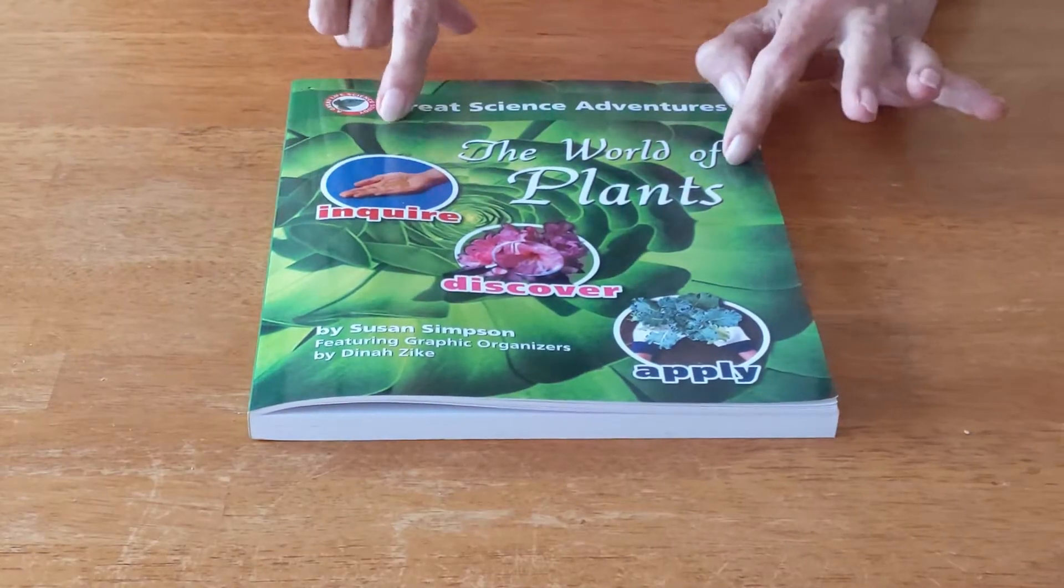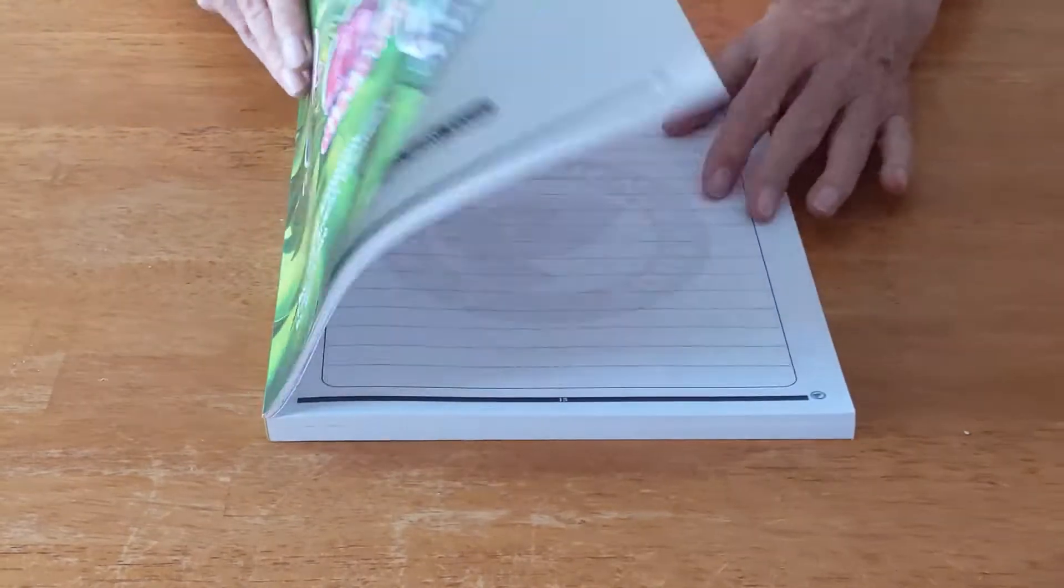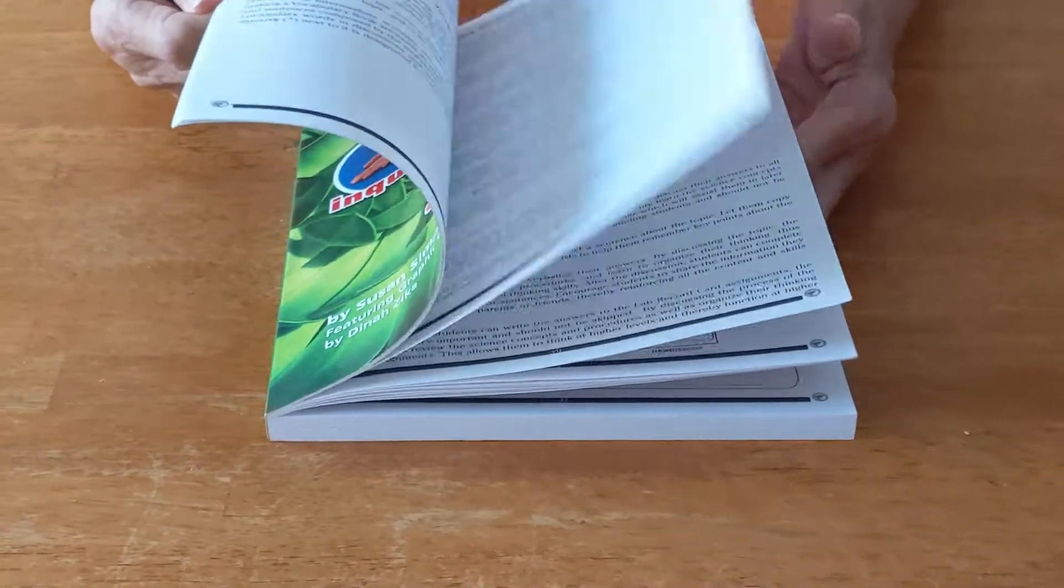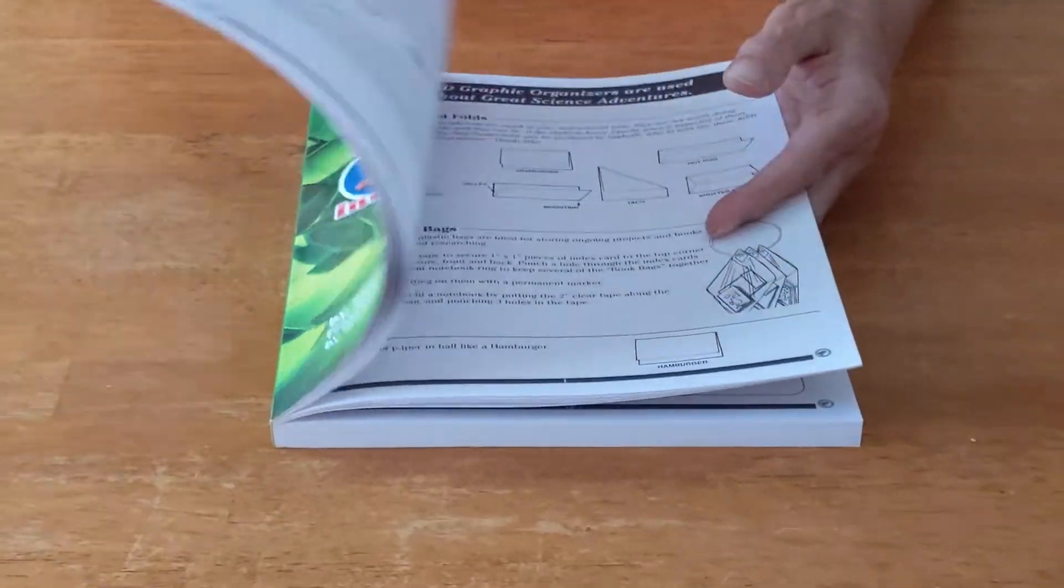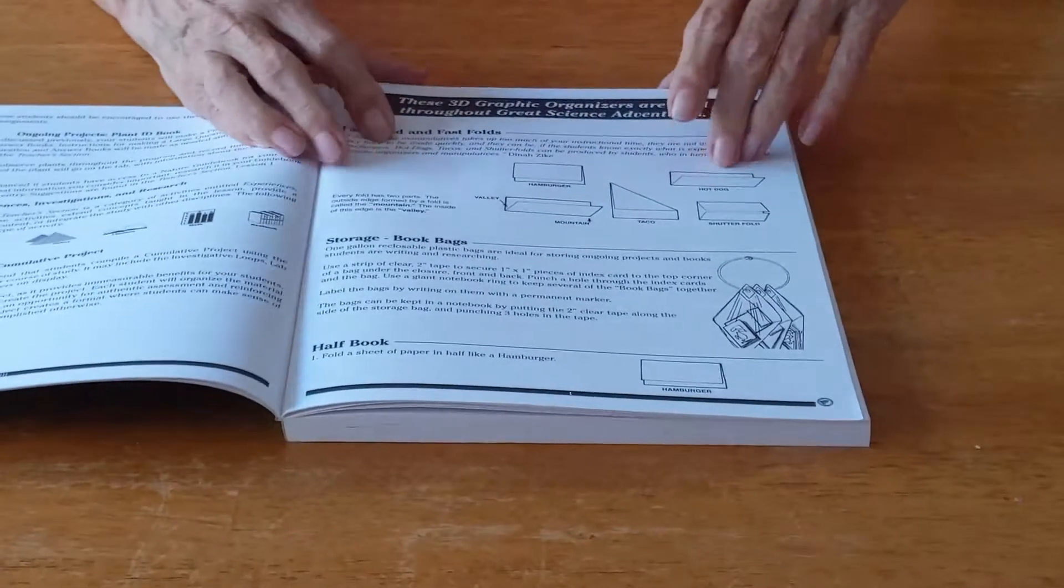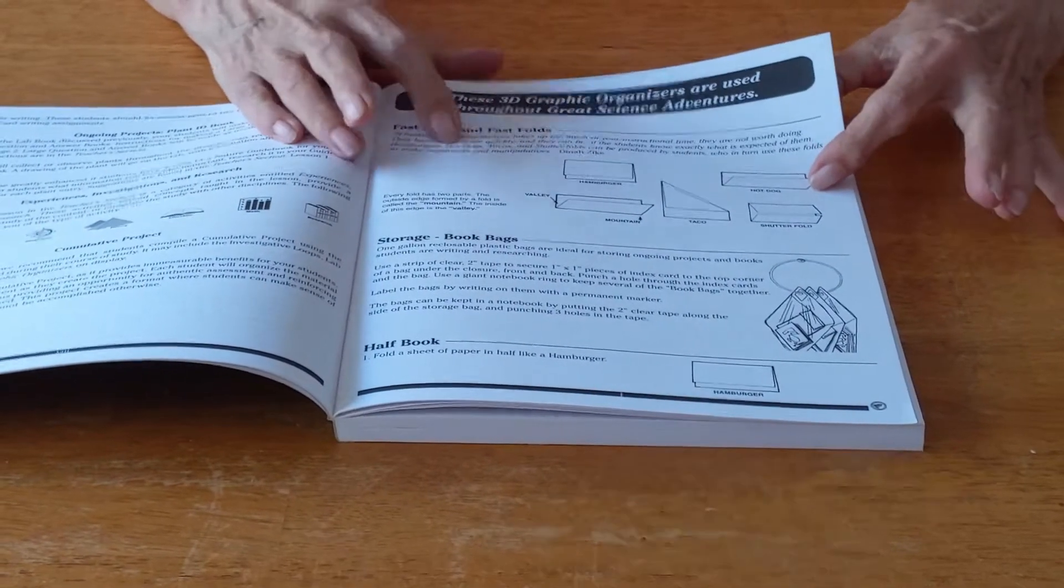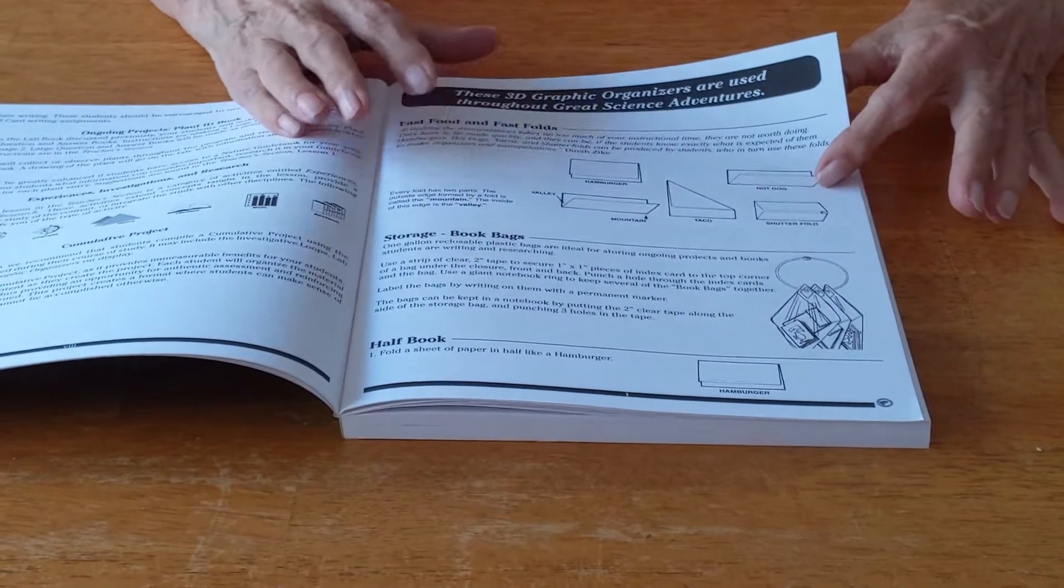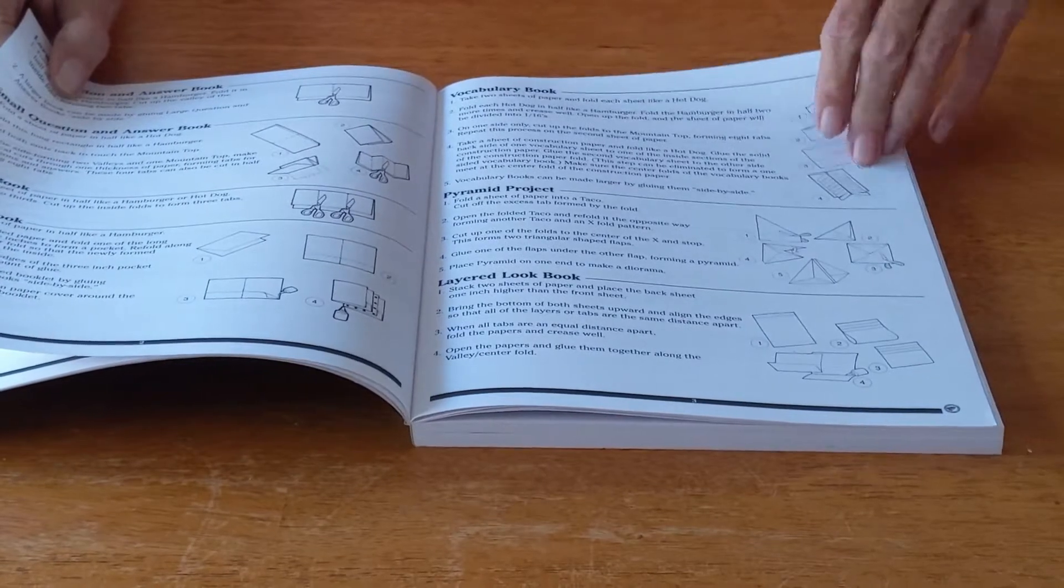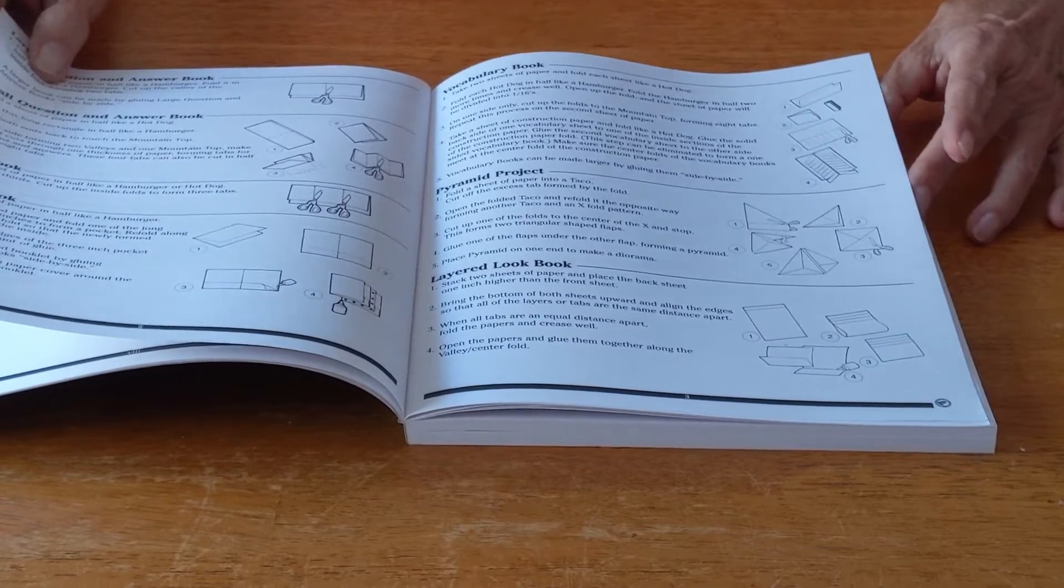I'm going to use the World of Plants as an example for telling you about our program and how it works. In the beginning of the book you will find the How to Use section. After that we have a section with the 3D graphic organizers from Dinah Zeit that are used in this book. She was the other co-creator of this program and was very involved in the process.